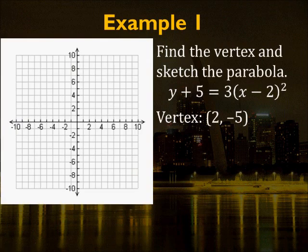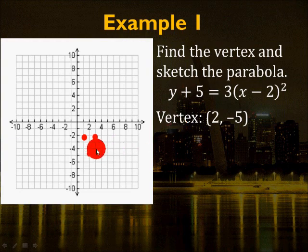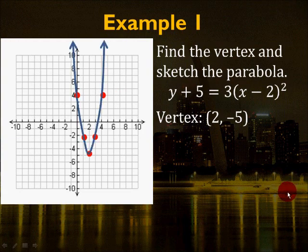If we were to graph y + 5 = 3(x - 2)², the vertex is at (2, -5) because h = 2 and k = -5. Plot the vertex as a starting point. Since a = 3, the parabola is narrower and steeper than y = x². Instead of going over 1 up 1, you go over 1 up 3 on both sides. Then mirror the image and plot your graph. You can always check on a graphing calculator or online graph.